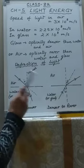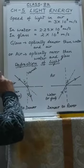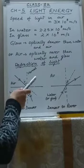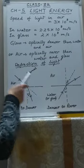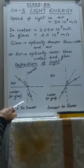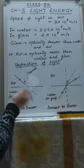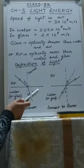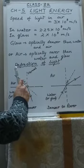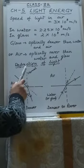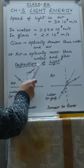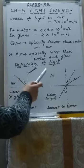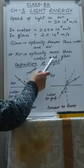We studied in the previous class the rectilinear propagation of light — that light always travels in a straight line. But this happens only when light is traveling in one medium. When a ray of light traveling in one transparent medium falls obliquely on the surface of another transparent medium, it travels in a direction other than its initial path. This change in the direction of the path of light when it passes from one optically transparent medium to another is called refraction of light.